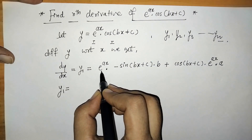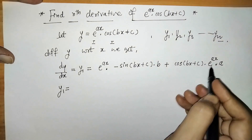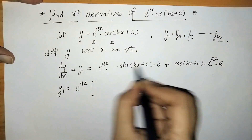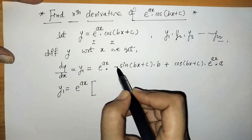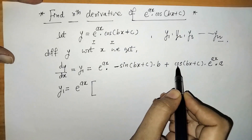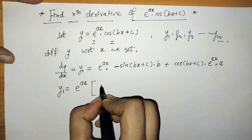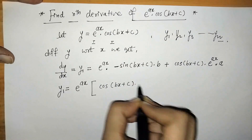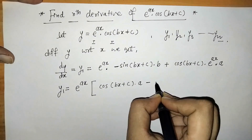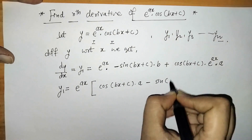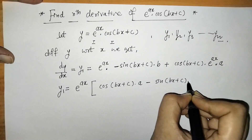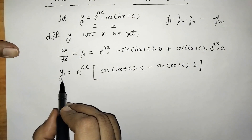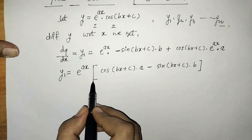We can see that e raised to ax is common, so we take it outside the bracket. Rearranging, we have e raised to ax into cos of bx plus c into a minus sin of bx plus c into b. So we got this first derivative y1.